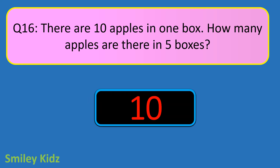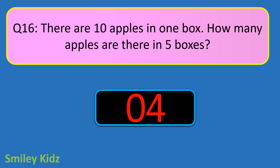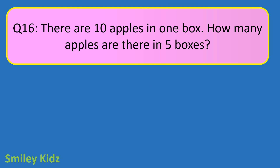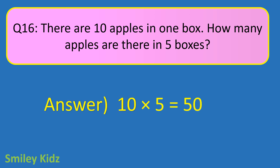Question number 16. There are 10 apples in 1 box. How many apples are there in 5 boxes? Your time starts now. And your time is up. The right answer is 10 times 5 is equal to 50. We should multiply 10 and 5, which is 50. Therefore, there are 50 apples in 5 boxes.